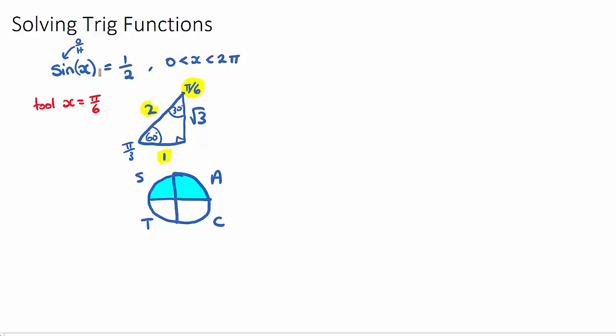So once we know that our trig function here, sine, was positive a half, we need to look at the positive sine quadrants. If this was negative a half, we would be looking at the negative sine quadrants, T and C.